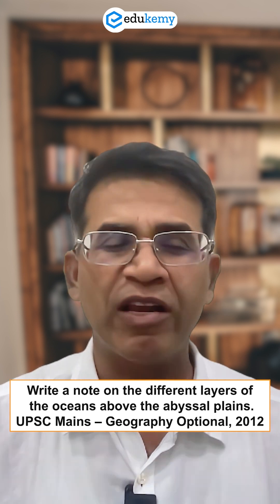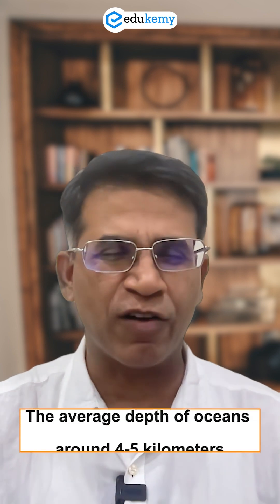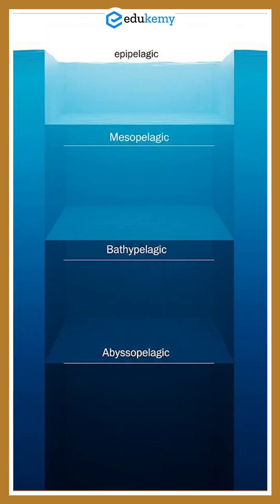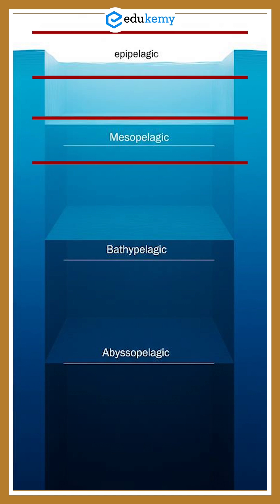It's a very standard, simple UPSC-level question. If you have done some basic class notes, we know that the average depth of oceans is around 4 or 5 kilometers. The typical zones we talk about are the epipelagic, mesopelagic, abyssopelagic, and bathypelagic zones. This is covered in your standard textbook oceanography.